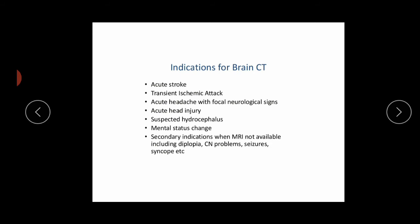Indications of brain CT include: acute stroke, transient ischemic attack, acute headache with focal neurological signs, acute head injury, suspected hydrocephalus, and mental status change. Secondary indications include when MRI is not available: diplopia, cranial nerve problems, seizures, and syncope.